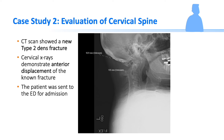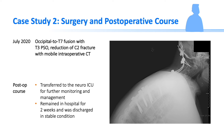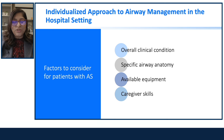The patient underwent an occipital to T7 fusion with T3 PSO and reduction of the C2 fracture using mobile intraoperative CT scan. Postoperatively, he was transferred to the neuro-ICU for further monitoring and management. The patient remained in the hospital for two weeks and was discharged in stable condition. An individualized approach was used for the airway management of this patient.